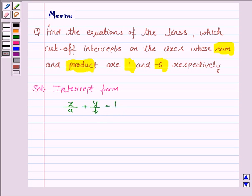Now, we are given that sum of the intercepts is 1 and the product of intercepts is minus 6. So, according to question, a plus b is equal to 1 and a into b is equal to minus 6.